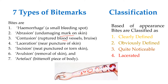Artifact is the complete removal of muscle or tissue along with the skin after the bite. These are the types of bite marks classified according to their appearance and degree of injury. Classification based on appearance includes: clearly defined, obviously defined, quite noticeable, and lacerated.